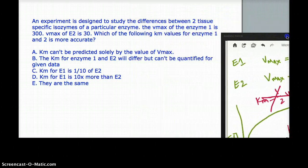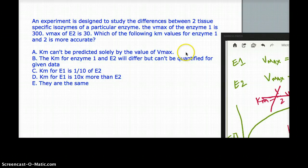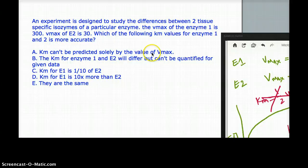So in this question now, let's look at the option. Option number A says Km cannot be predicted solely by the value of Vmax. That's what I think is the answer. But let's look at the other option anyways.